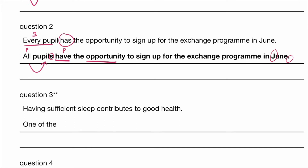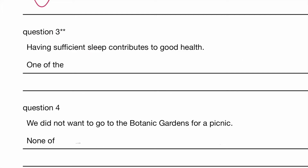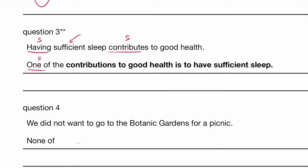Question 3, level 2: Having sufficient sleep contributes — 'contributes' with S means it's singular. Having something is singular — this is what we call a gerund, and that is singular. Also, 'one of' is also singular. But here is the thing: you have to change the form of 'contributes' from a verb to a noun. So: one of the contributions to good health is to have enough sleep. 'One of' is singular, therefore 'is' is singular.